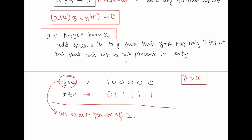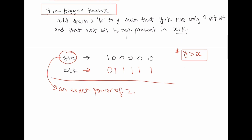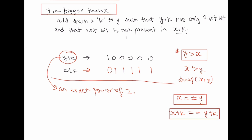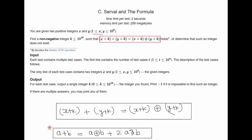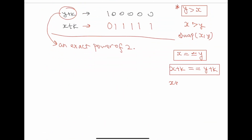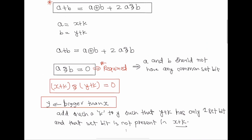Will this always work? If y is not bigger than x, we can just swap the values. But what if x and y are equal? If you add k to both equal numbers, x plus k equals y plus k. If you take AND between two identical numbers, the result is never zero unless both are zero. Since x and y range from 1 to 10 to the power 9, they are never zero.